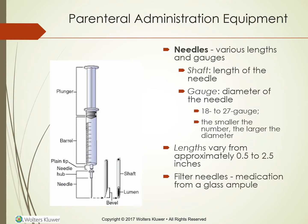For needles, there are various lengths and gauges. The shaft is the length of the needle; the gauge is the diameter. Gauges start at 18 and go to 27 — the smaller the number, the larger the diameter. Lengths vary from approximately 0.5 to 2.5 inches. Filter needles are medication needles used to draw from a glass ampule. In the picture you can see the shaft, lumen, and bevel of the needle.